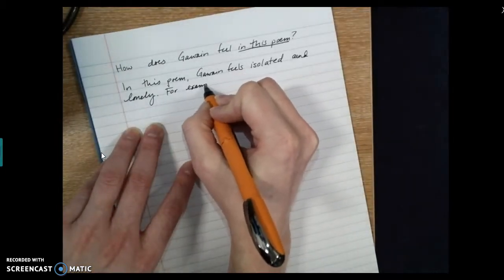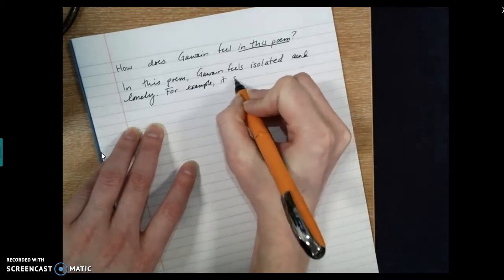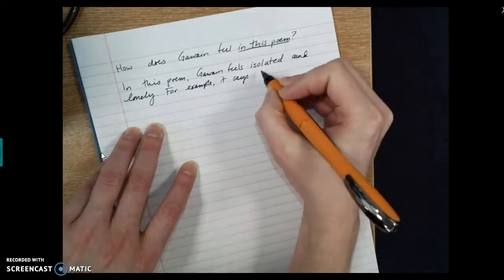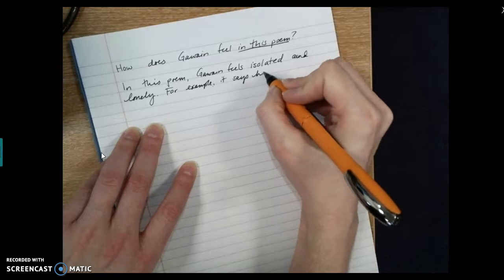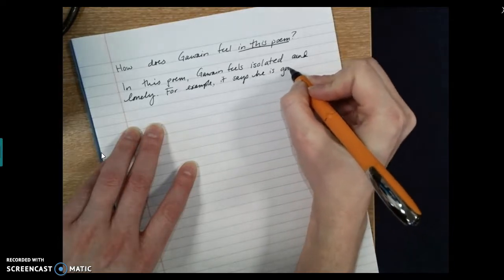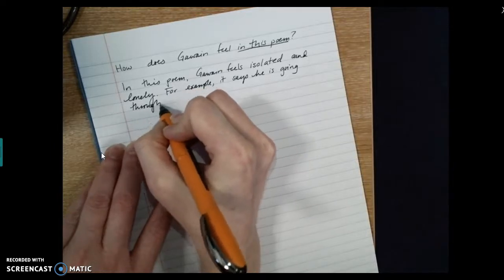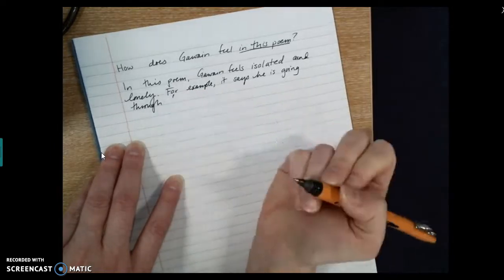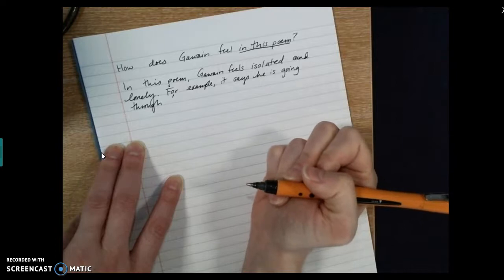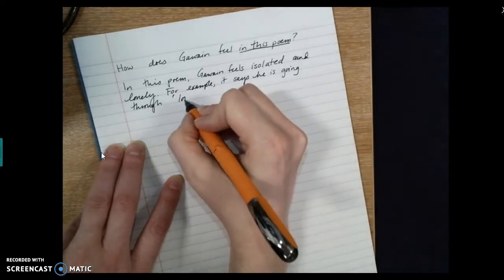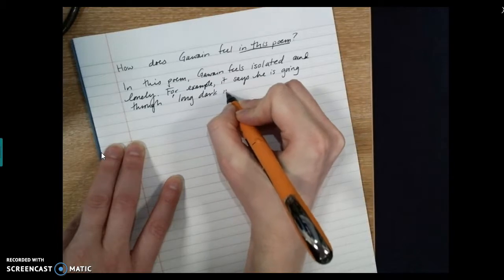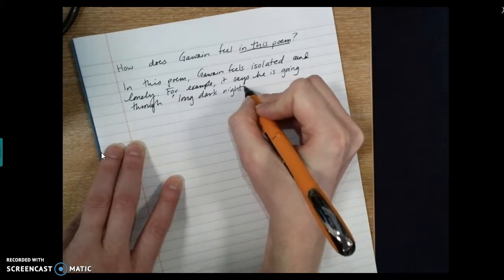it says, he is going through. And I'm going to use these speech marks to show I'm copying from the text. That's how I show I'm copying. Long, dark nights, unloved and alone.